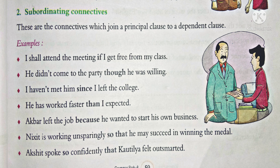If I get free from my class, then I will attend the meeting. The principal clause is 'I shall attend the meeting' — yeh pura sentence apne aap mein kafi hai. 'If I get free from my class' is the dependent clause — yeh apne aap mein pura nahi hai. So here, 'if' is the subordinating connective.